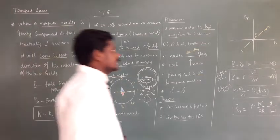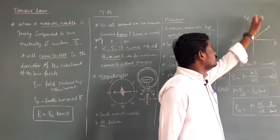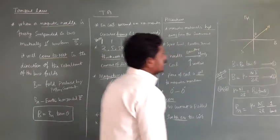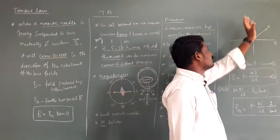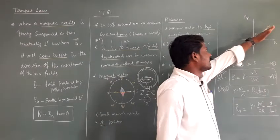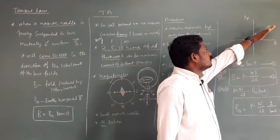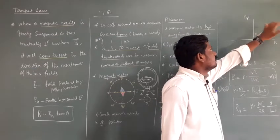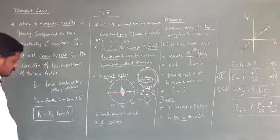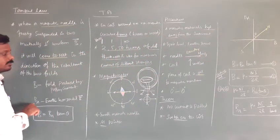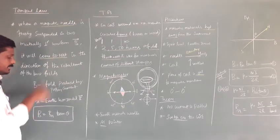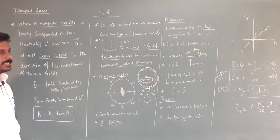Consider a magnetic needle placed in two mutually perpendicular fields. B is the magnetic field due to a current carrying conductor, and BH is the horizontal magnetic field. When the magnetic needle comes to rest at the direction of the resultant of the two fields, that is tangent law. It relates the horizontal component of the magnetic field and the field due to the current carrying conductor: B is equal to BH tan theta.